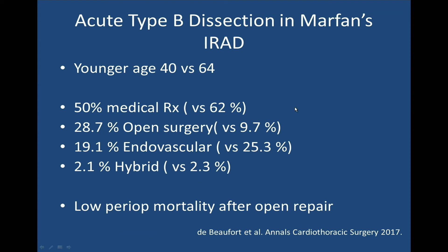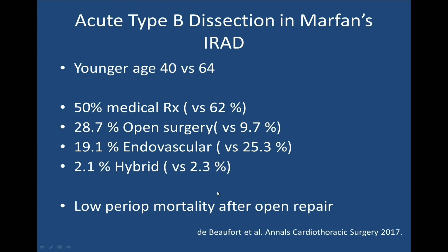From IRAD data, patients with inherited aortopathies present with type B dissections at a younger age — 40 years old versus 64. Only 50% of those patients can be controlled by medical therapy versus 62% in the larger group. Open surgery is performed much more commonly in this group, 28% versus 9.7% in the greater series, and endovascular treatment in 19% versus 25%. Interestingly, patients with conditions like Marfan's disease had low perioperative mortality after open repair, probably because they're younger with much less comorbidity.